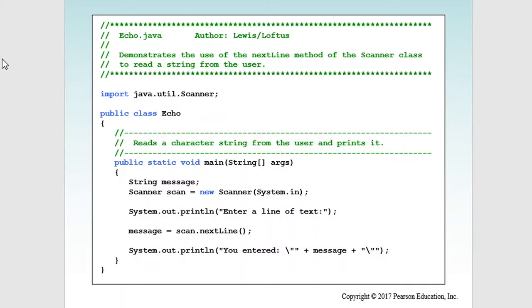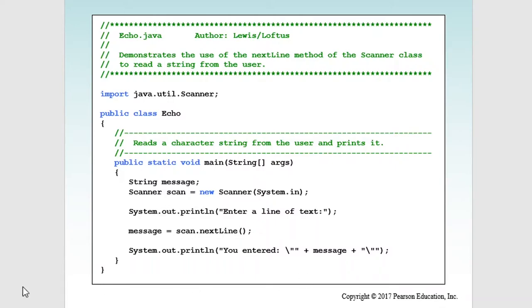Here they give an example called echo. They declared a string variable named 'message' and instantiated a Scanner object that reads the keyboard. They tell the user to enter a line of text, then use the nextLine method to scan the input from the keyboard and store it into the variable 'message', and then output the message. In a sample run, the user enters 'you want fries with that' and the program prompts back 'you entered you want fries with that'.